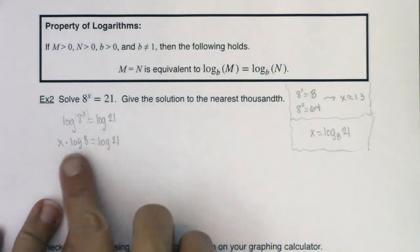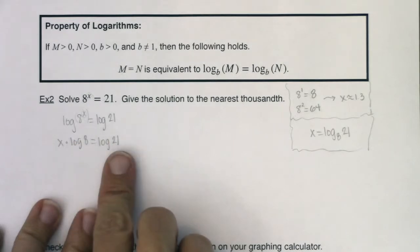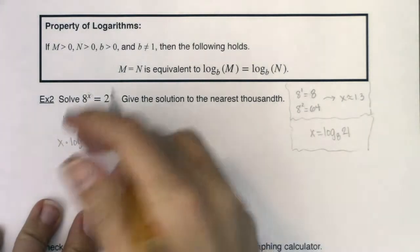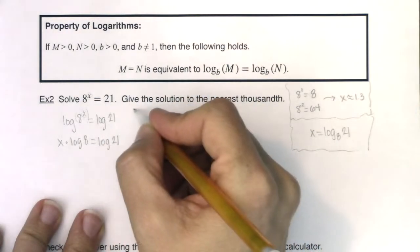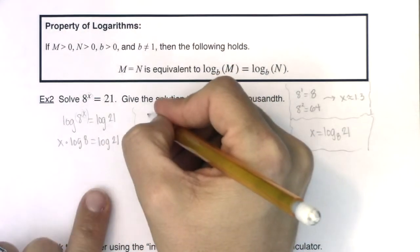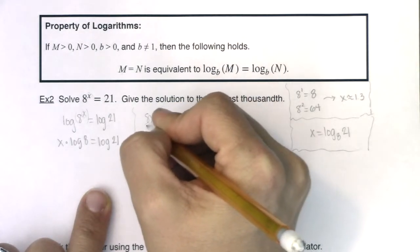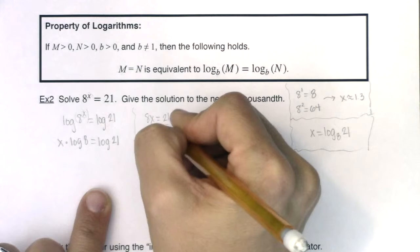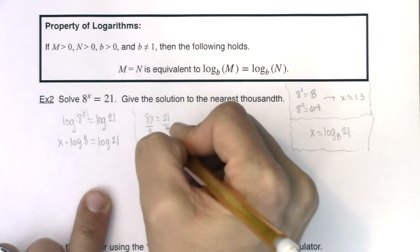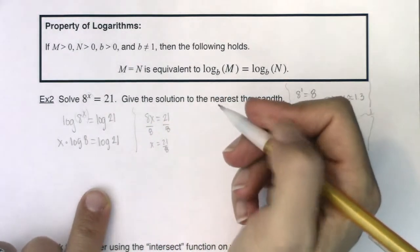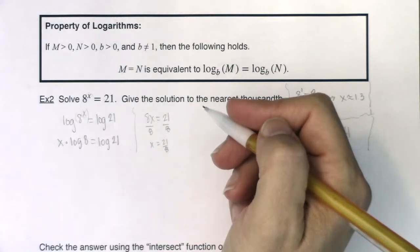Now, these might look scary, but they're just numbers. Log 8 and log 21. I could calculate them on my calculator. And let me just give you a for instance. I want to give you a little side problem here. If I had said 8x was equal to 21 and I wanted to solve for x, I think you would have told me to divide by 8 on both sides, right? And you would have told me, hey, it's 21 eighths. Same principle applies here. This is just a number.